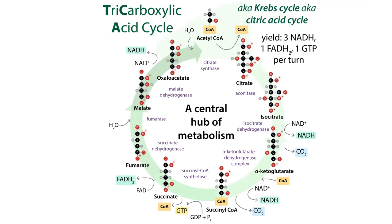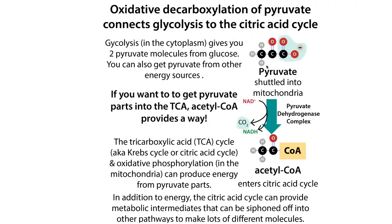How do we get from pyruvate to acetyl-CoA? We have to oxidatively decarboxylate it. Pyruvate is an alpha-keto acid — it has a carboxylic acid group with a carbonyl alpha to it, just like alpha-amino acids have an amino group and acid group next to a carbonyl. Alpha-keto acids are tricky to decarboxylate, so we have to use complex enzymes with cofactors like TPP, lipoate, and FAD.